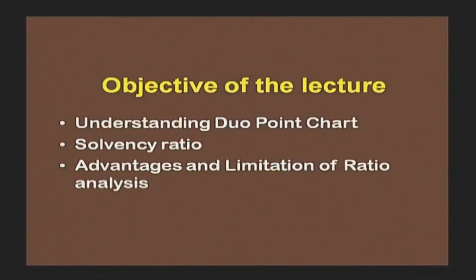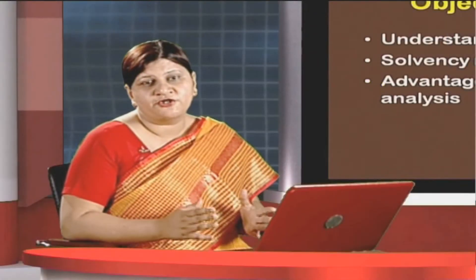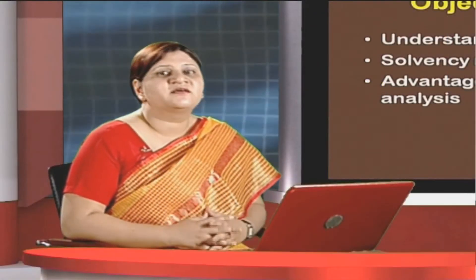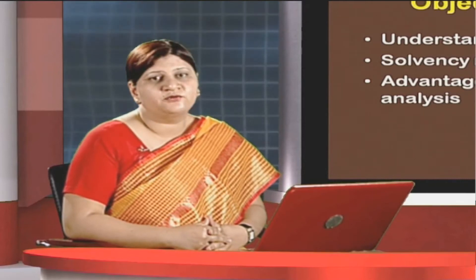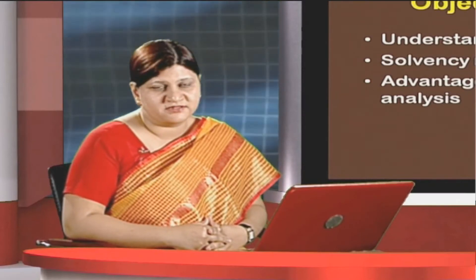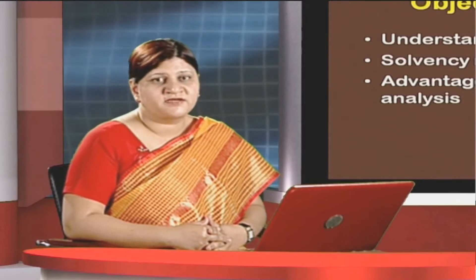Taking up one of the bases — that is the solvency of the company — we will discuss certain ratios. The objective of this lecture is to analyze and understand one very fundamental concept: the DuPont chart, that is, return on capital employed. The DuPont chart is the basic premise by which we can ascertain return on capital or return on net worth. It is a very important calculation and base of ratio analysis which we will learn in detail — the calculation aspect and the conceptual aspect of the DuPont chart.